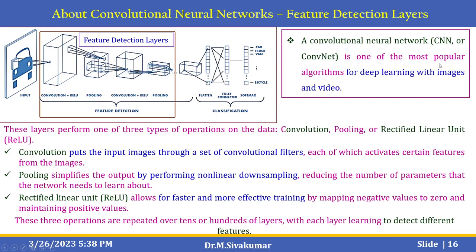CNNs are one of the most popular algorithms for deep learning with images and video. Each layer performs one of three types of operations: convolution, pooling, or rectified linear unit (ReLU). These three operations are repeated across tens or hundreds of layers, with each layer learning to detect different features. This layered structure is the essential part of convolutional neural networks.